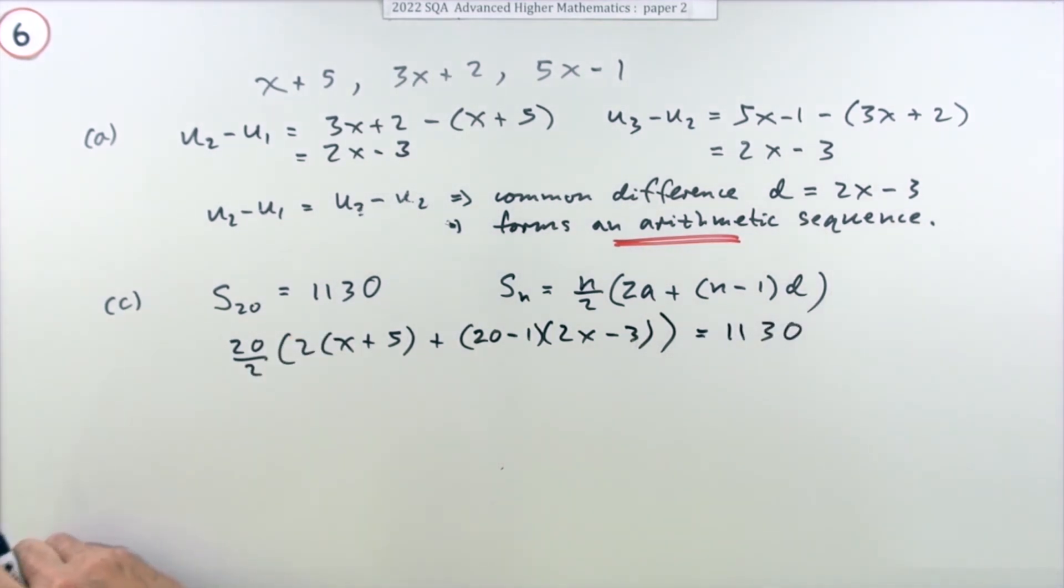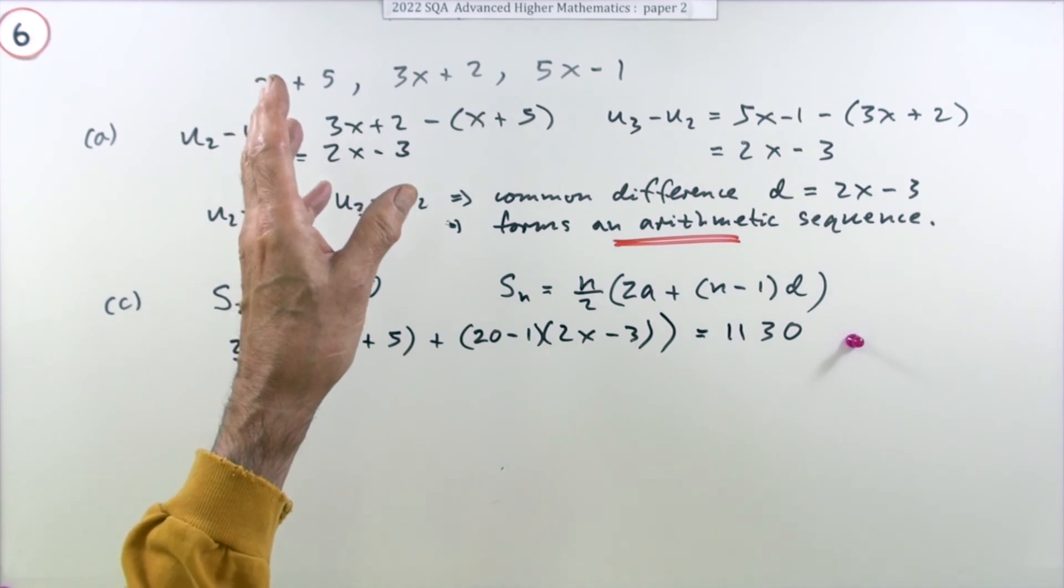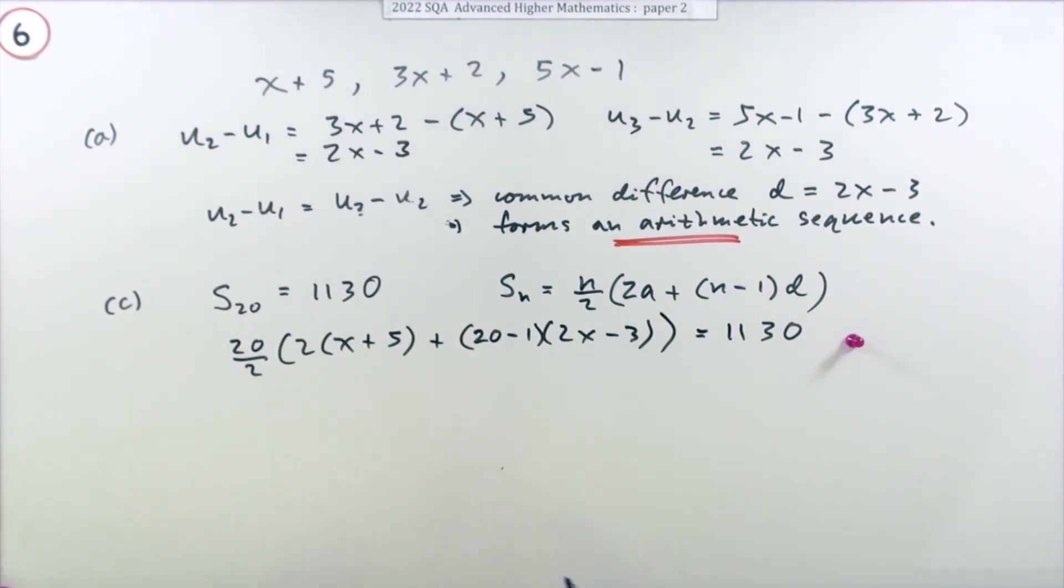Now, writing that down, which just means copying that from the front and putting the figures you've already got or the expressions you've already got, gets you a mark. Now you've just got to solve it.